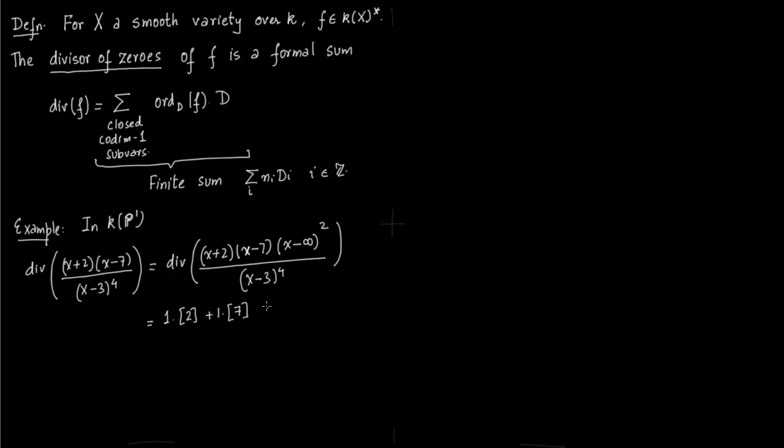So now we have degree of numerator is 4 and degree of denominator is 4. And we first find order at 2, then order at 7 is again 1, order at 3 is minus 4, and order at infinity is 2. And that is what we get.